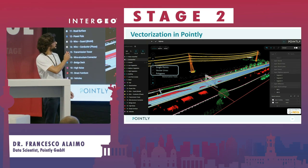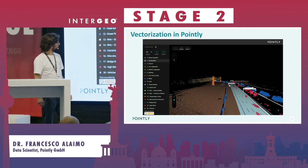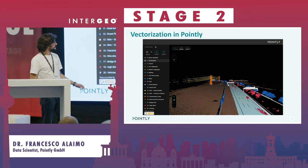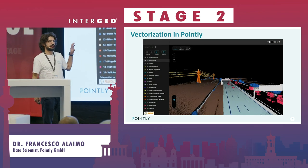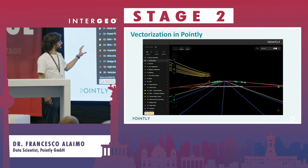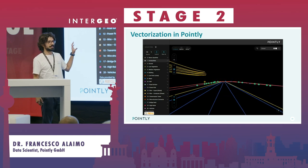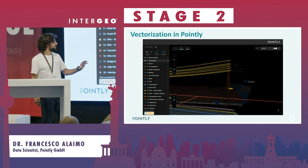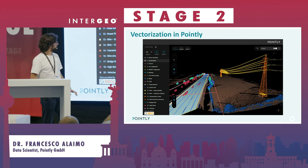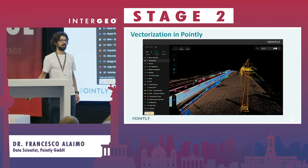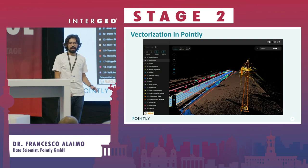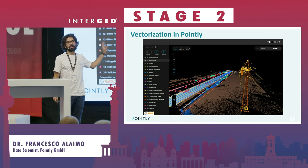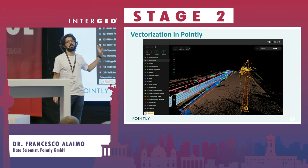This is what we want to focus on next. The idea is that in the same interface you can see an automatically classified point cloud and with just a click convert it to a vector model to see the full picture. The first automated model along these lines should be available on the platform around January.